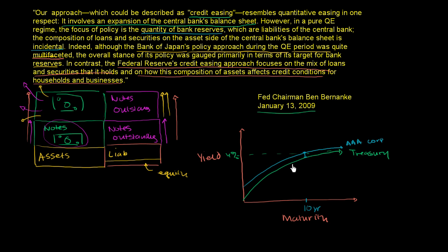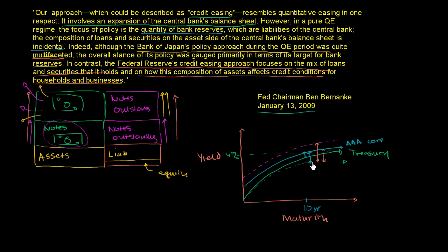Maybe the Fed is able to, through interventions, print money and normally they buy shorter-term debt. But maybe they start buying longer-term treasury debt, and maybe that helps get the yield curve for longer-term treasuries down a little bit. But maybe the AAA corporate debt doesn't react — maybe the spread widens. Maybe the same thing for highly rated mortgage-backed securities, which have a slightly higher interest rate. Even though treasury interest rates are coming down while they're intervening, because of all the craziness happening in the economy, the spread between treasuries and AAA mortgage-backed securities, or the spread between treasuries and AAA corporate debt, widens — or another way to think about it, the treasury rates are coming down while these things aren't following.